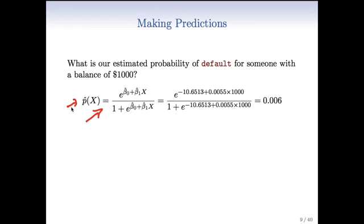And here we've plugged in the numbers. And we use our calculator, our computer, and we get 0.006. So somebody with a balance of $1,000 has a probability of 0.006 of defaulting. In other words, pretty small.